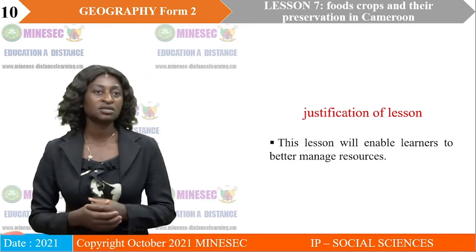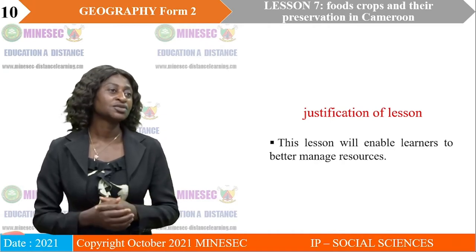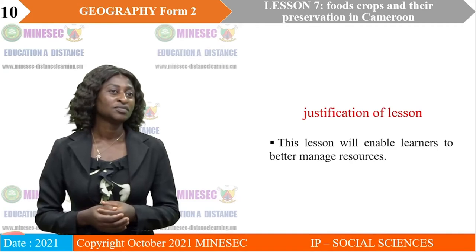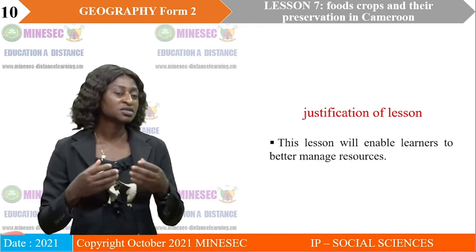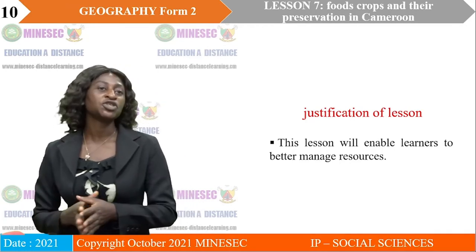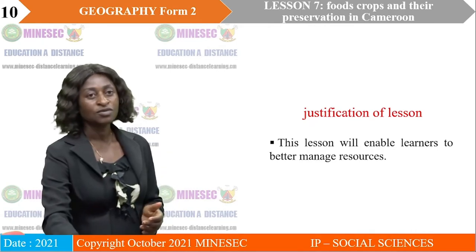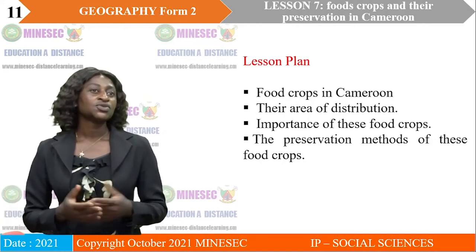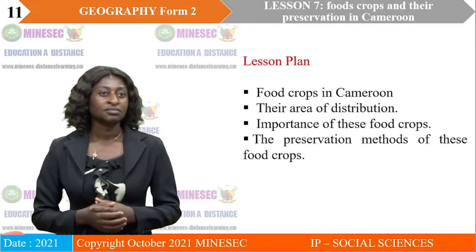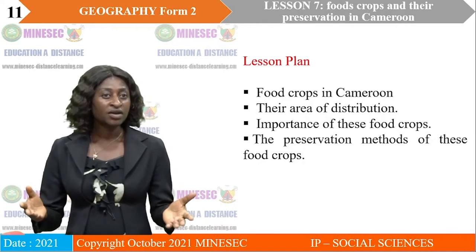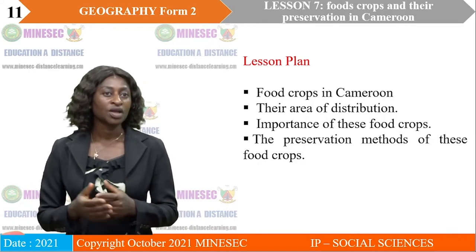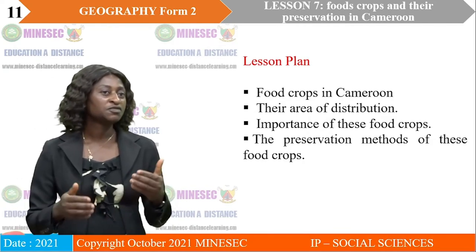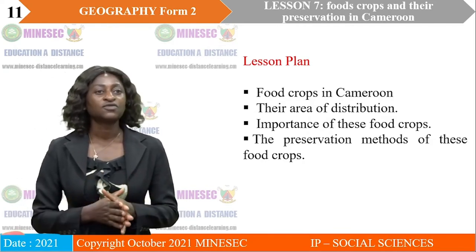The justification enables learners to better manage resources. These resources take time to produce, and if we don't preserve them, they will spoil and the population will suffer. So we have to learn how to better manage these resources. Our lesson plan covers food crops in Cameroon, their area of distribution, the importance of these food crops, and the preservation methods used.